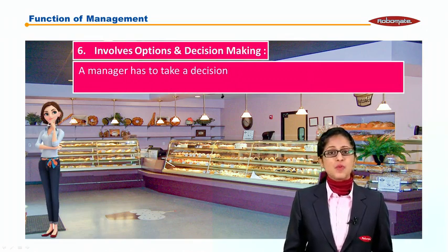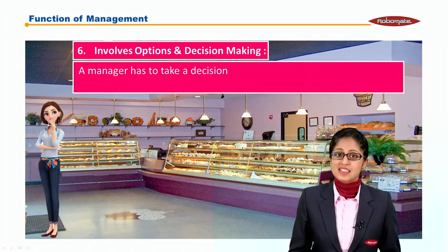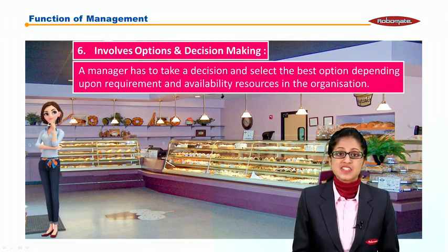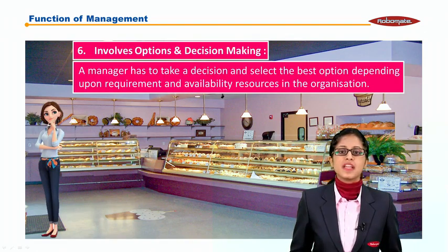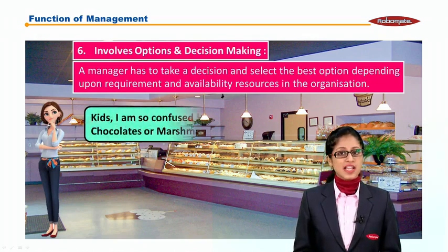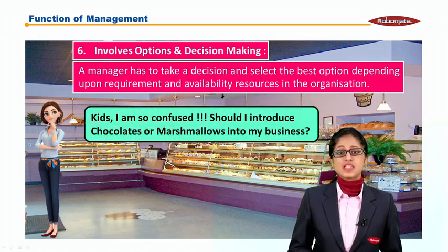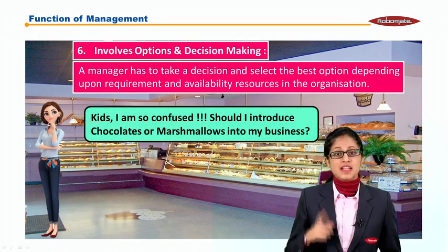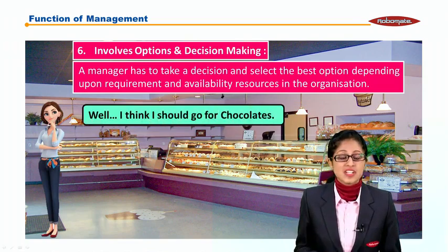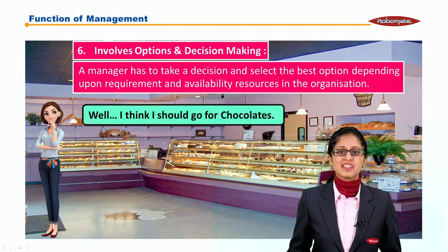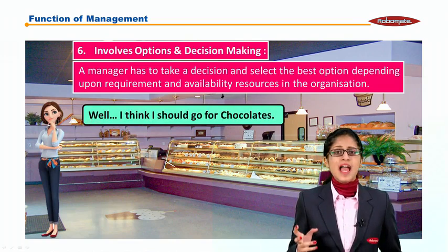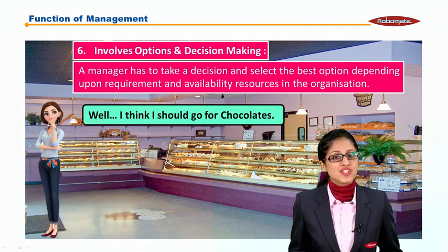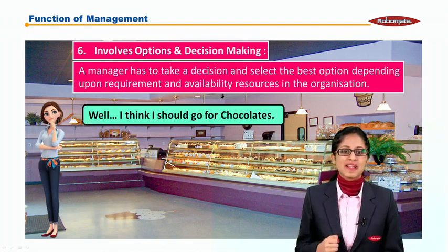The sixth point says planning involves options and decision making. A manager has to take decisions and select the best option depending upon the requirement and availability of resources in the organization. Annie says: 'Kids, I am so confused — should I introduce chocolates or marshmallows into my business?' She has to take a decision among the options, and she concludes: 'I think I should go for chocolates.'